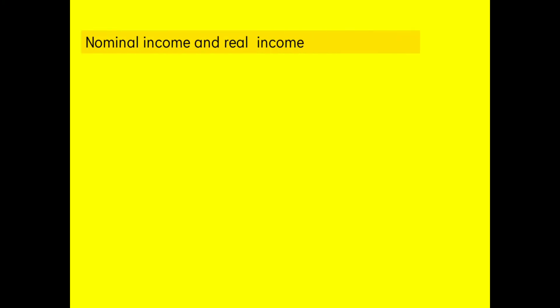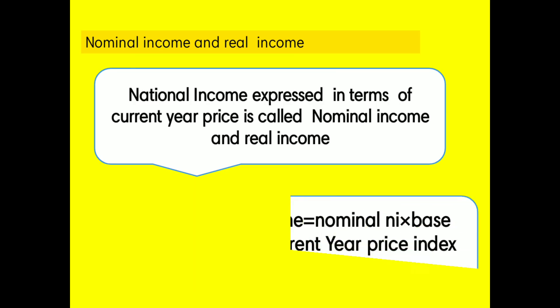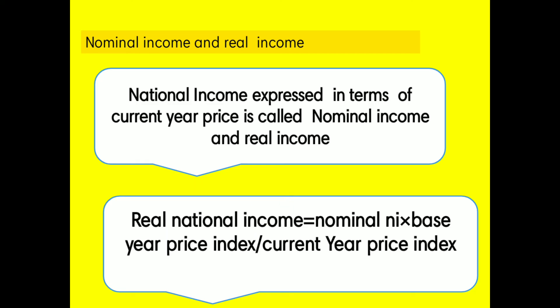The next identity is nominal income and real income. National income expressed in terms of current year price is known as nominal income. The formula for real national income is: Real NI equals Nominal NI multiplied by base year price index, divided by current year price index. Thank you for watching, please subscribe.